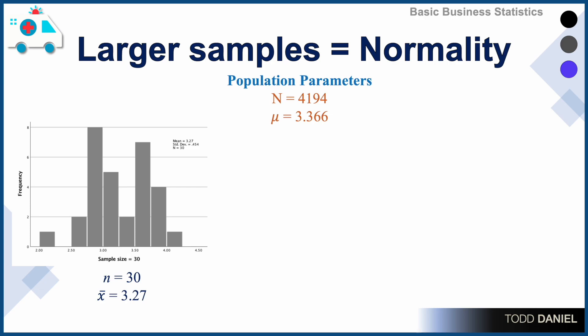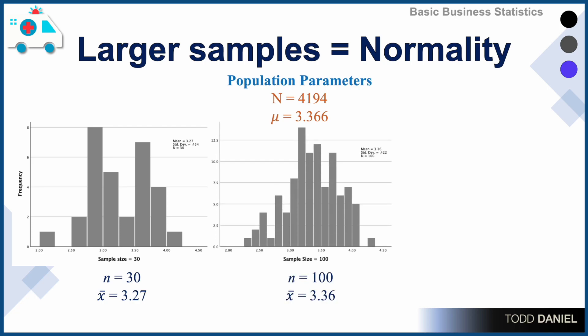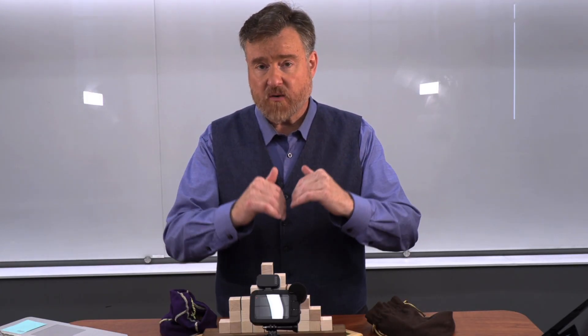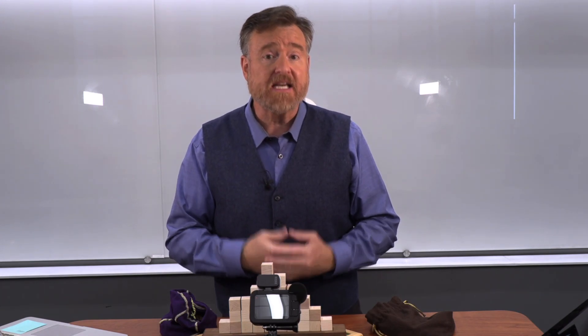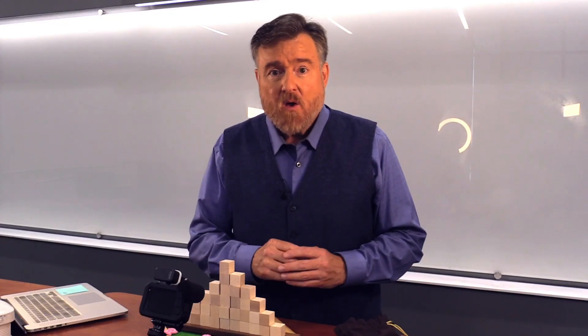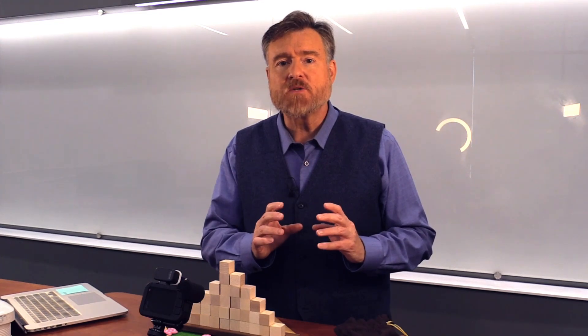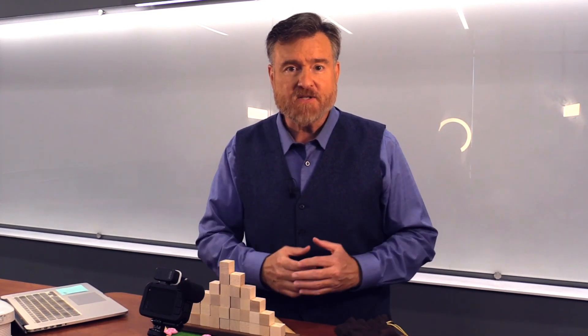Here are three distributions of sample means drawn randomly from our population. We see that when the sample size is 30, the distribution does not look a lot like a normal curve — there's a hint of normality, but we could do much better. Increasing the sample size to 100, we clearly see normality emerging. At a sample size of 1,000, the normality of the curve becomes quite obvious. The takeaway is that as we increase sample sizes, we decrease sampling error and increase the normality of our distribution of sample means. There's still more to learn, and we're going to look at the central limit theorem next, which will expose something completely unexpected.